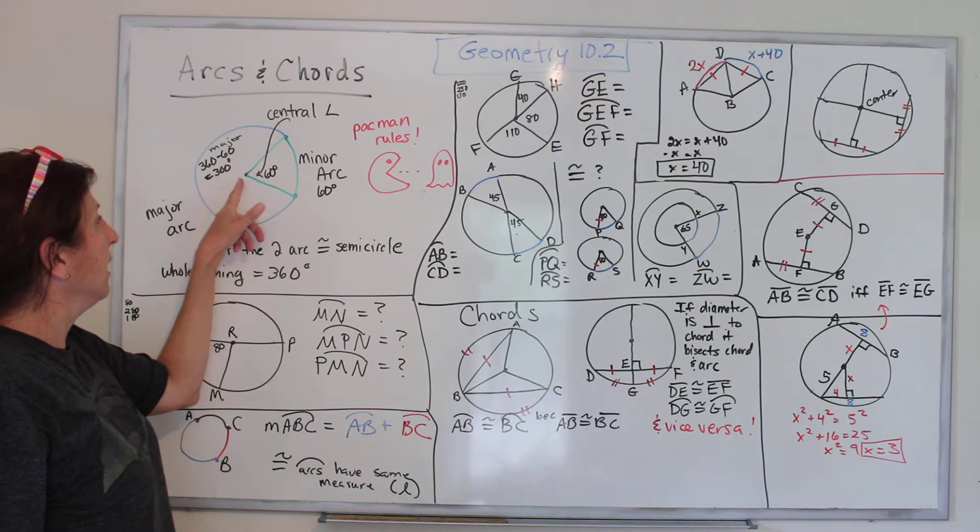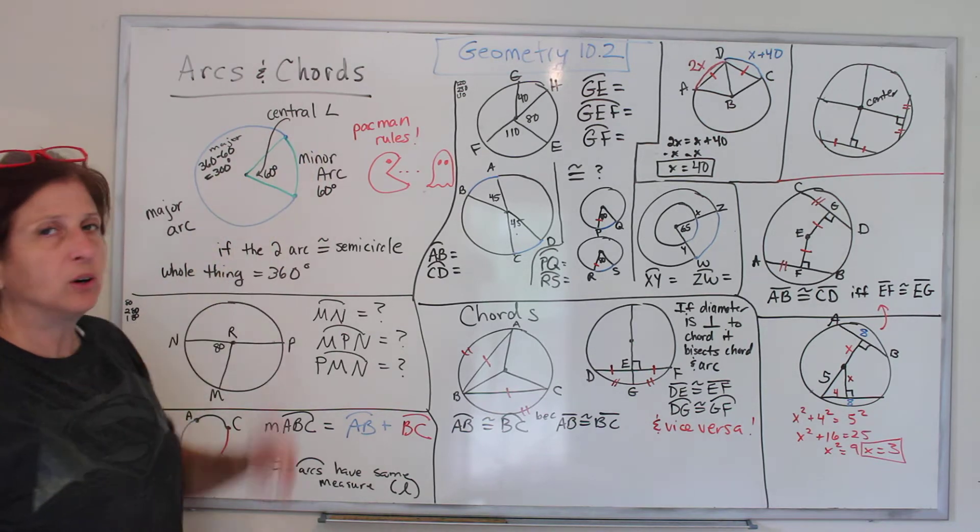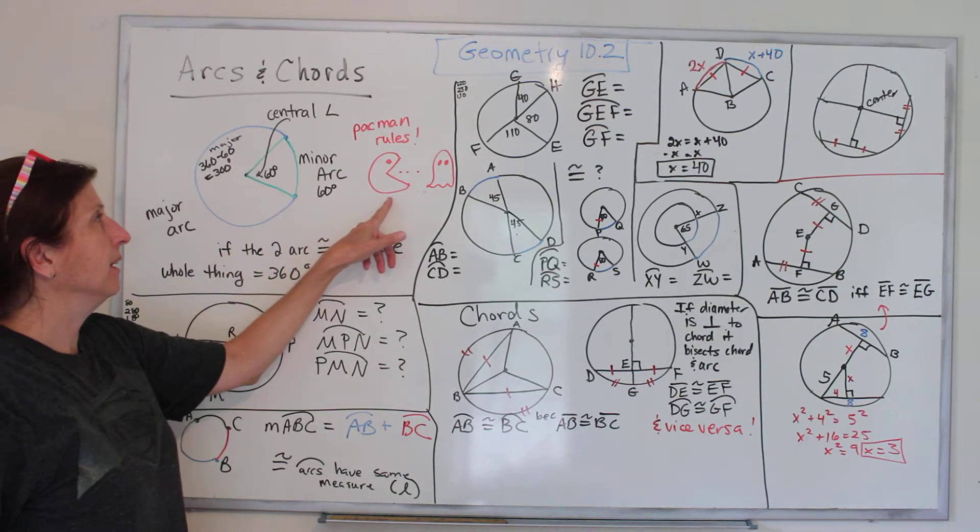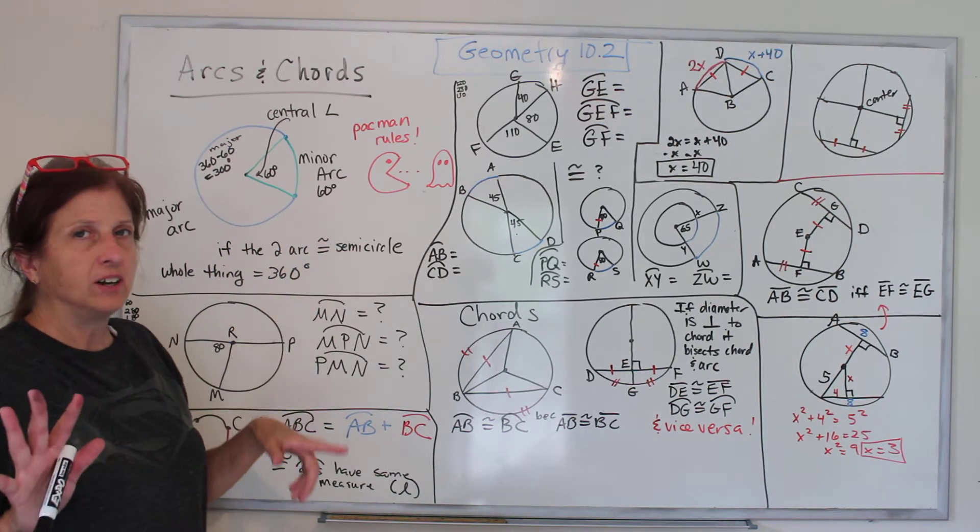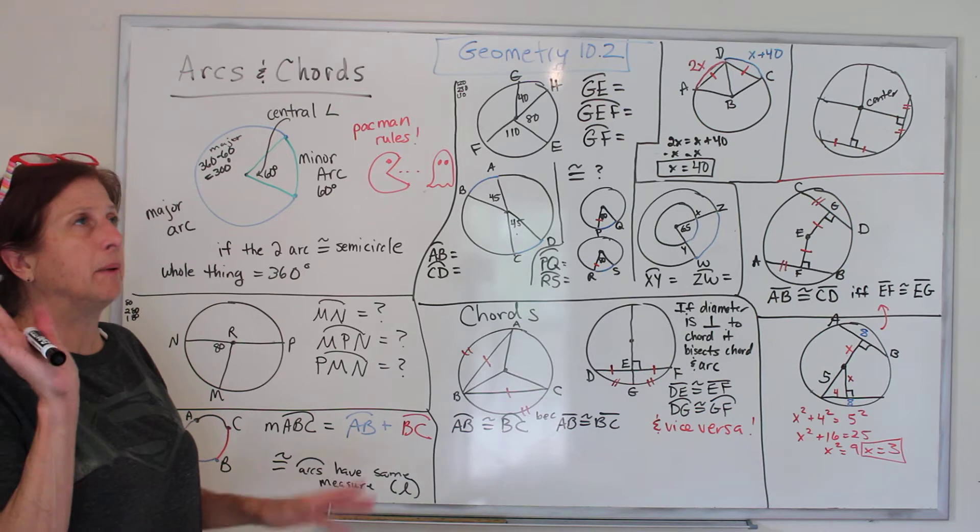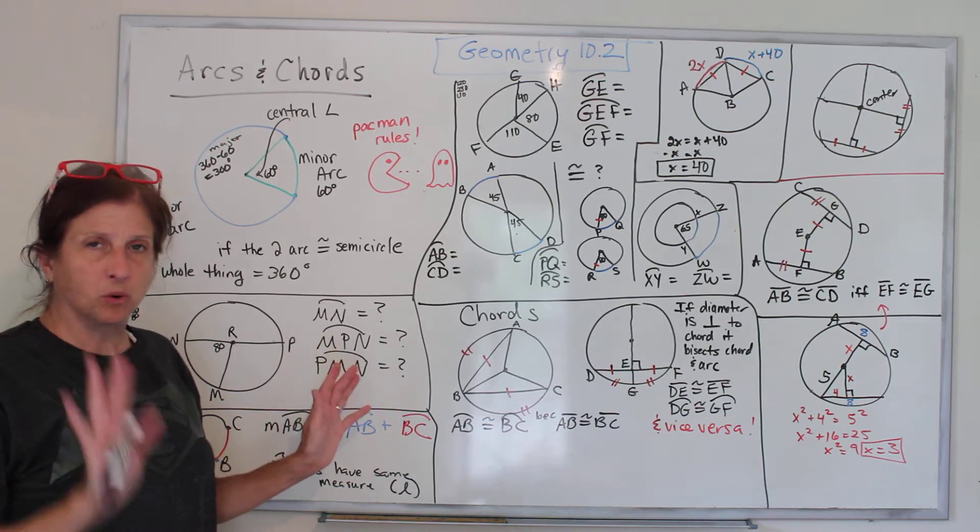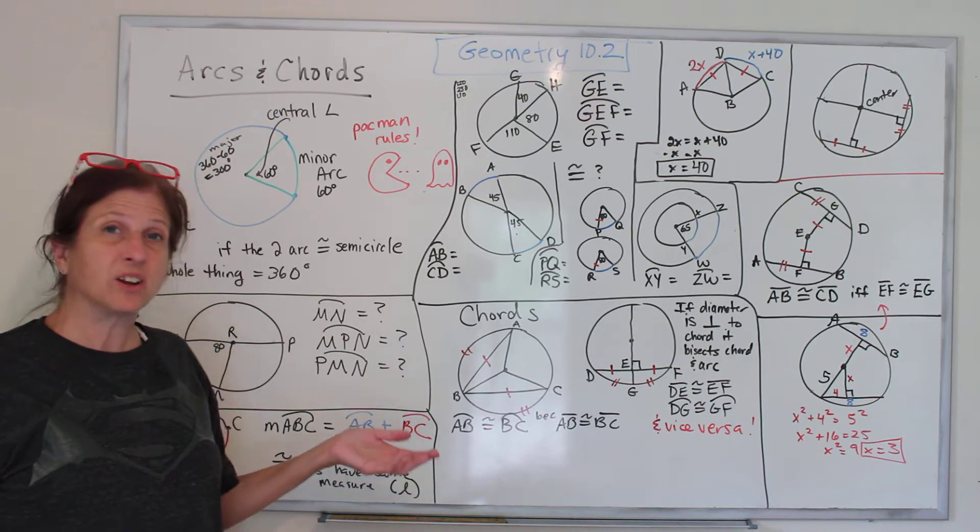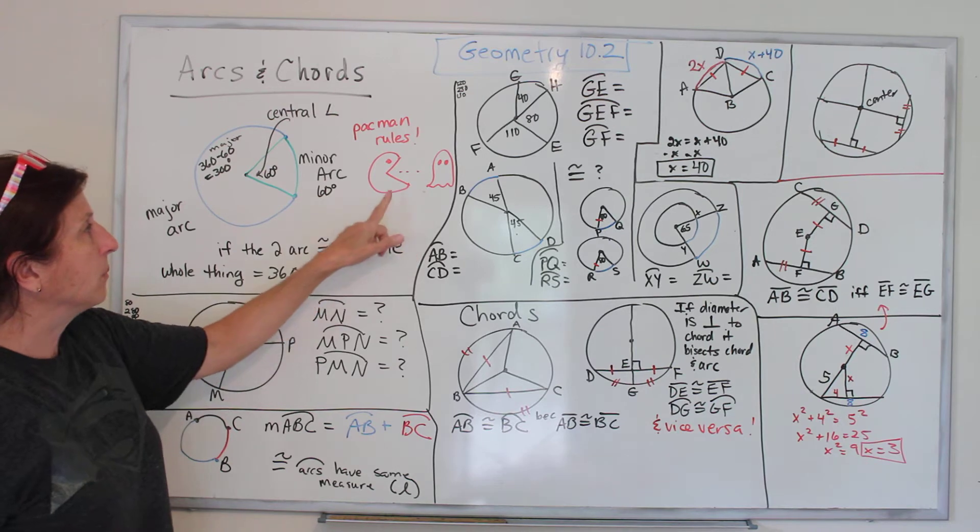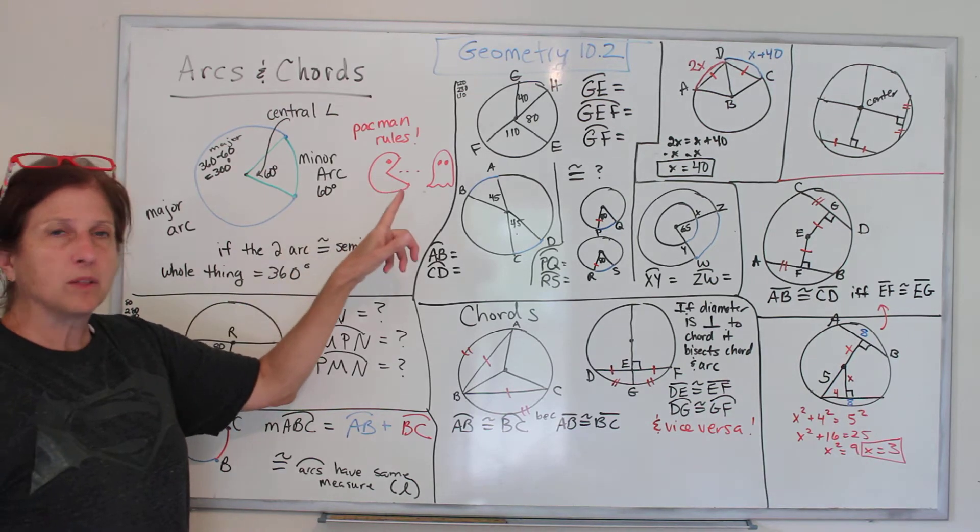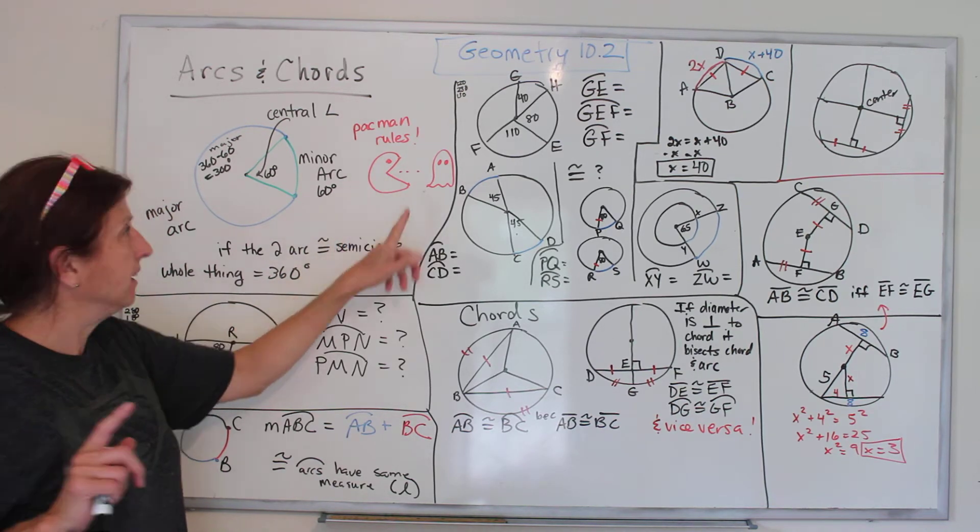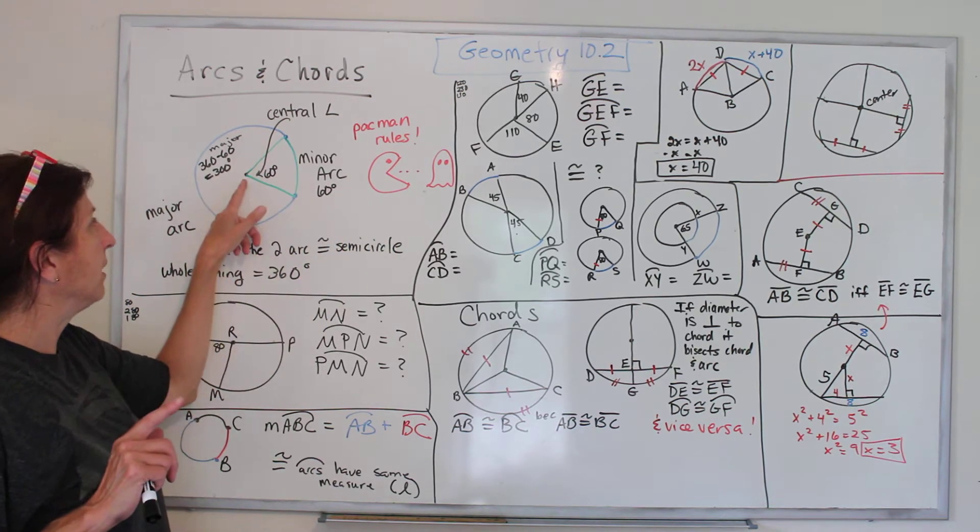This is a circle. I have drawn two radii. So it looks like Pac-Man. Get it in your head that these are Pac-Man Rules, because later on we're going to be talking about what looks more like the Grandpa from Rolie Polie Olie. But right now we're talking about Pac-Man. And with Pac-Man, his mouth hinge is in the center of his head.